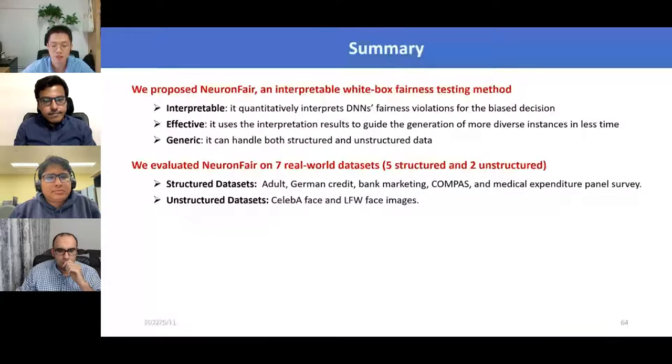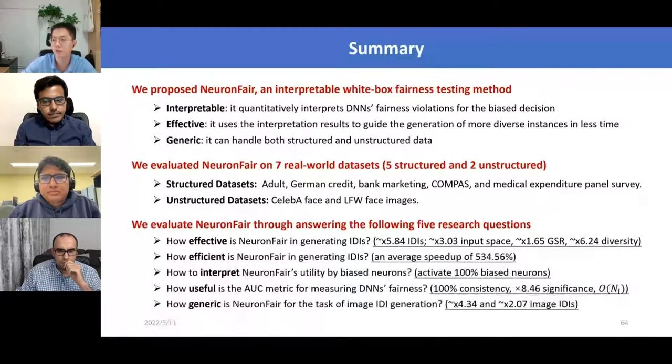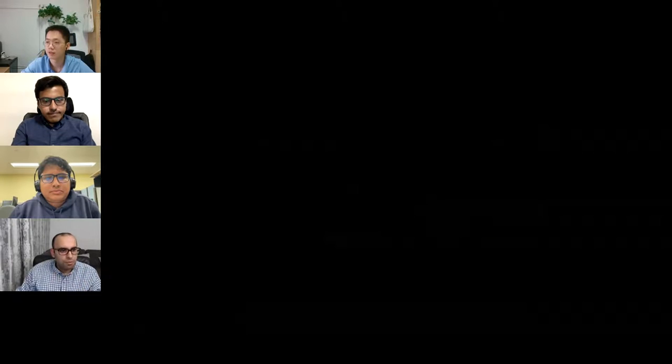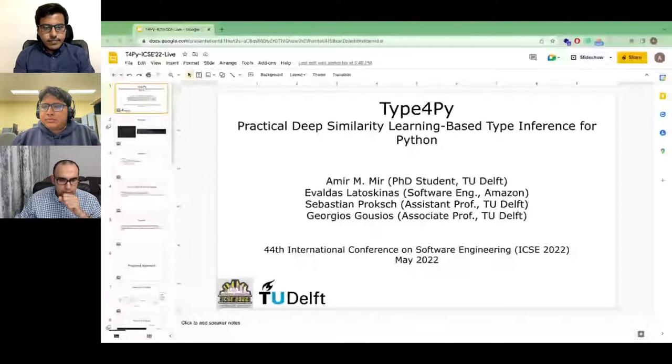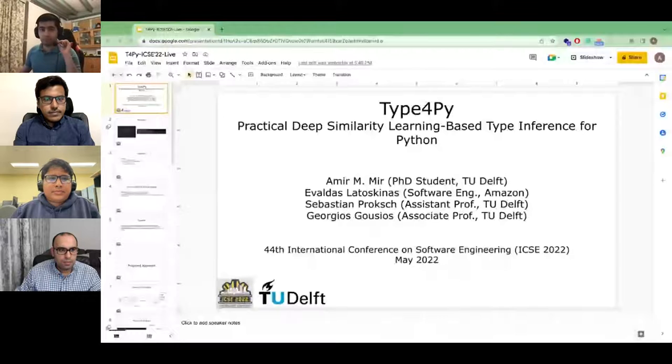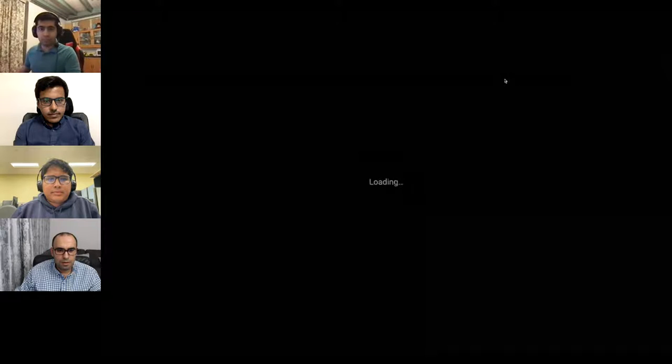In conclusion, we propose NeuronFair, which performs well on interpretability, efficiency, and generalization. We conduct detailed experiments evaluating NeuronFair on seven real-world datasets, and we systematically analyze it from five aspects. Thank you for your attention. Our next presentation is on the paper TypeForPy: Practical Deep Similarity Learning-Based Type Inference for Python, presented by Amir.